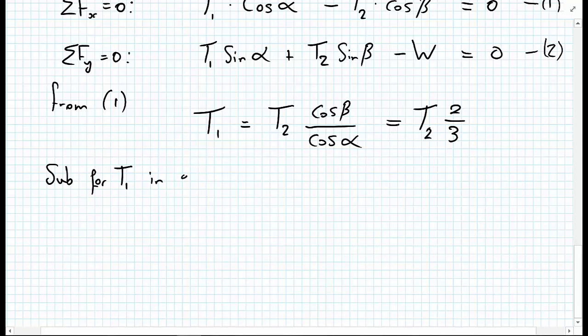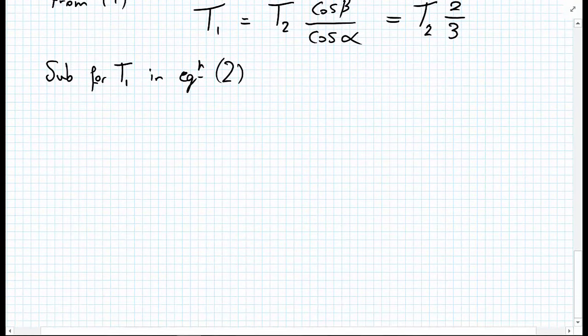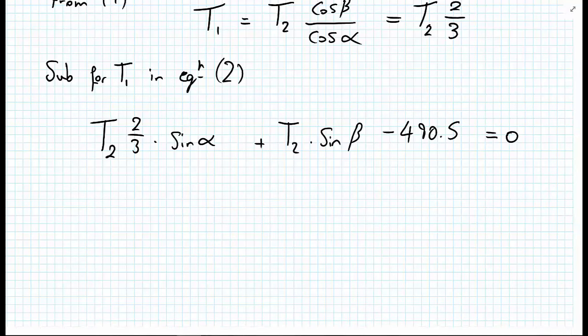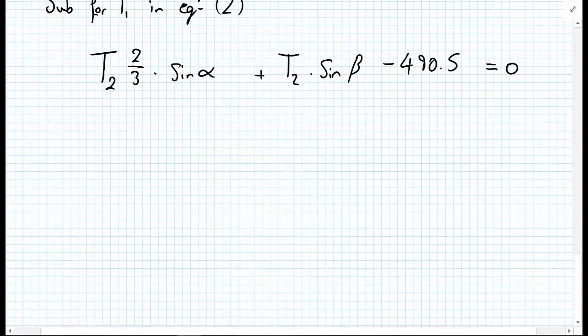And we're going to substitute this result back into equation number two. So substituting for T1 in equation two, we get T2 multiplied by the two thirds times by the sine of alpha plus T2 multiplied by the sine of beta minus the 490.5 equals zero. And so we have one equation, one unknown being T2, and we also know what the sine alpha and sine beta are.